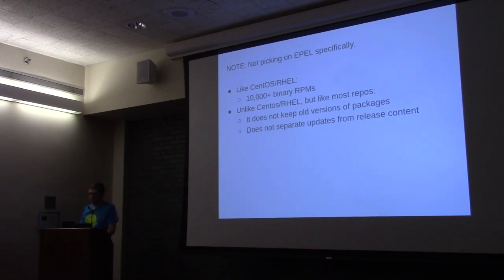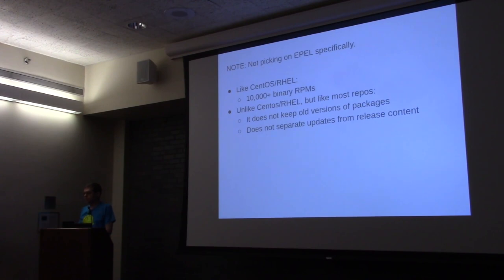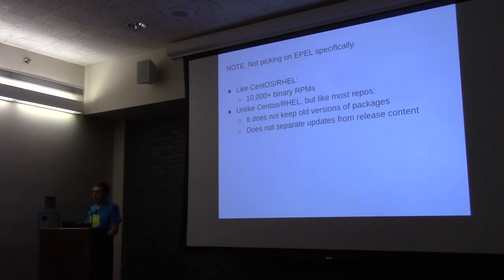If, for example, a package like Ansible 2.7.2 is the current version, that's the only version you will see — you won't see 2.7.0 or 2.7.1. And EPEL does not separate updates from release content. It is one repo, unlike RHEL 7.6 versus RHEL Updates.